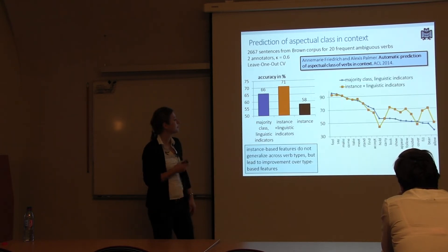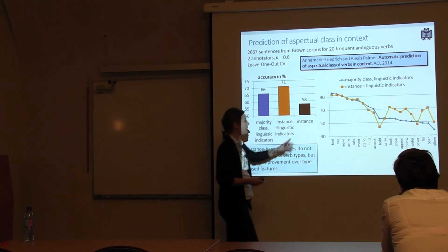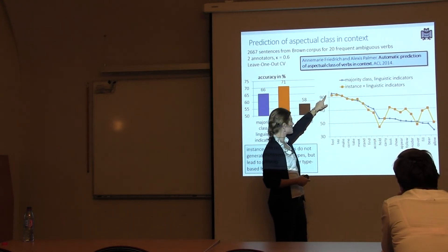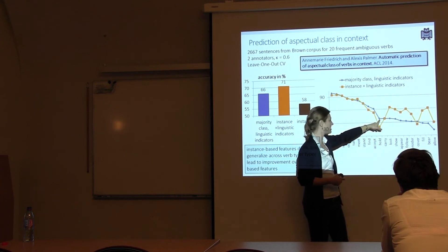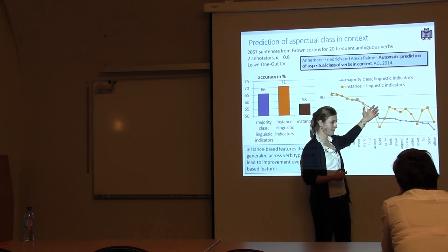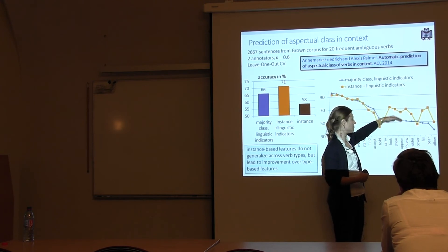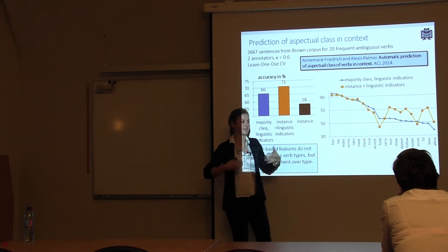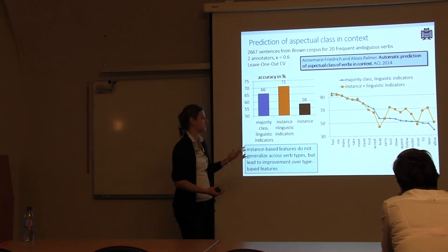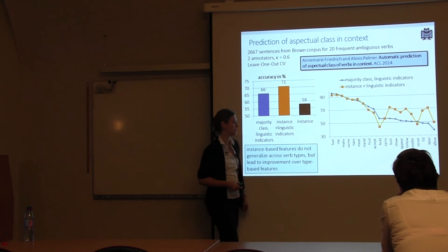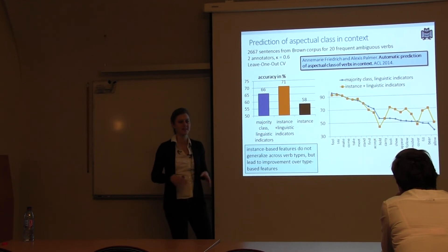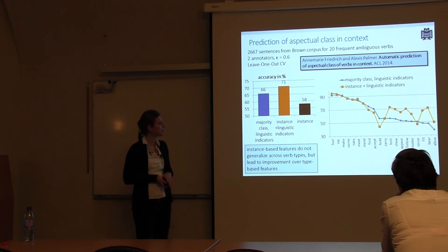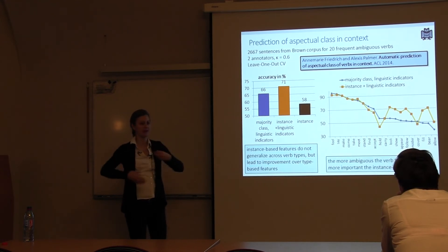Results per verb show that when majority class is high, adding instance-based features doesn't help much. As majority class decreases, the system outperforms it — instance-based features help most for ambiguous verb types. One outlier verb 'hold' performed worse — likely due to annotation errors where annotators labeled things inconsistently or where the majority class was 'can't decide.' The general principle holds: the more ambiguous the word type, the more the context matters.